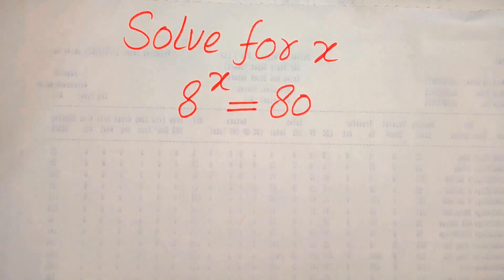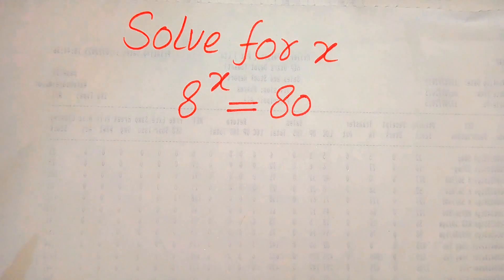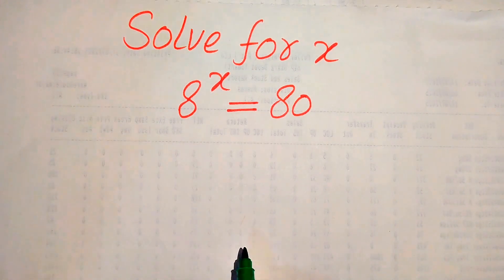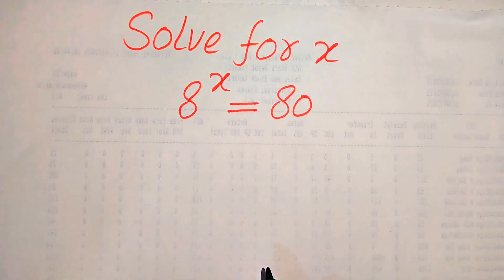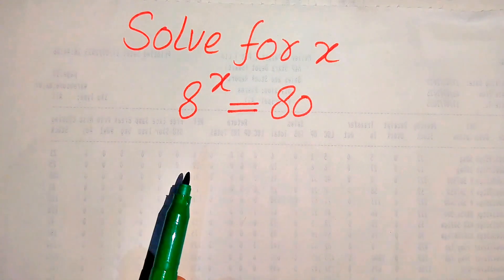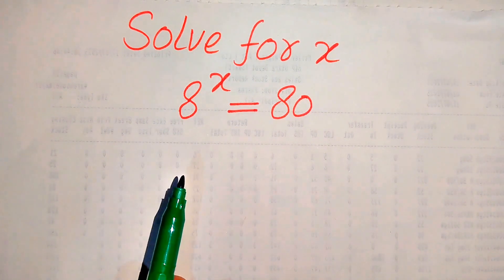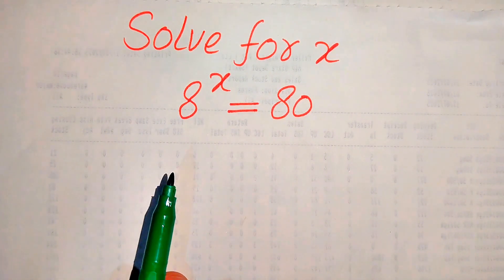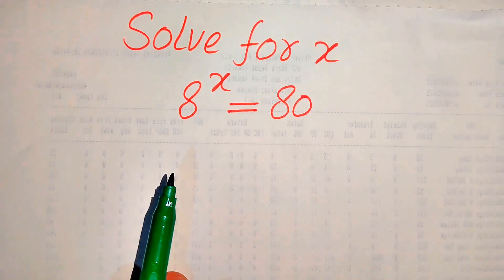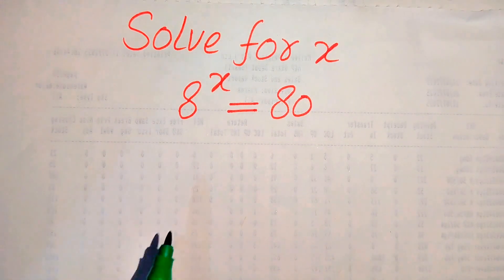Hello everyone. How to solve this problem for the values of x if we have 8 to the power of x equals 80. We solve this problem for all the values of x. You can see this is an exponential equation with variable x, so we solve this problem with the help of logarithm.